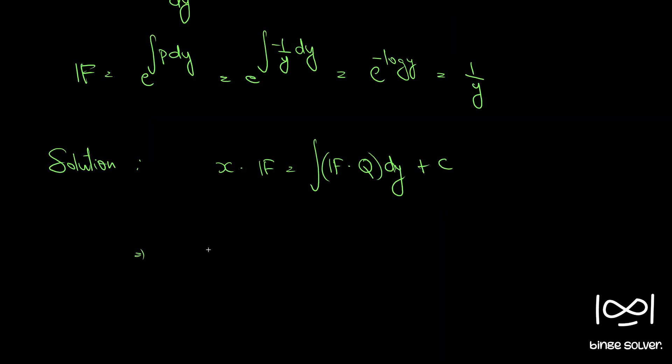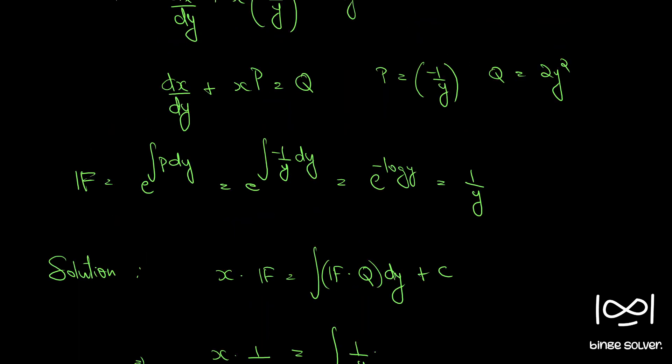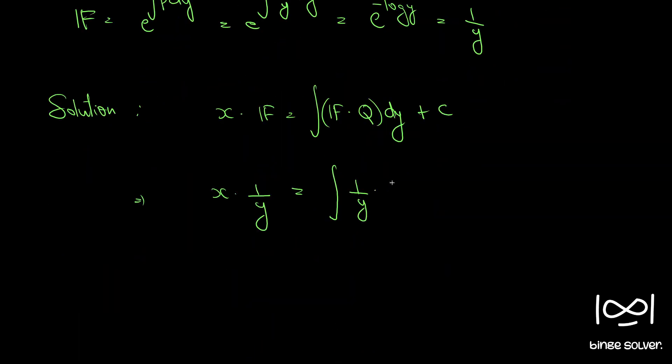We have x into 1 by y equal to integral 1 by y into q, q is 2y squared, 2y squared by y plus c.